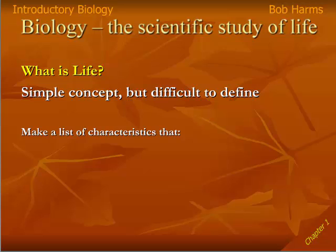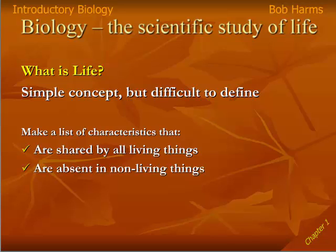Rather than try to define life, I'd like you to take a minute and make a list of characteristics shared by all living things. What are some characteristics that all living things must do to be alive? Those characteristics should be absent in non-living things. For example, the first thing that maybe jumps into your head is carbon. We know all living things are made of carbon, but carbon is also found in the air and in rocks, so carbon is not absent from non-life — it doesn't really separate life from non-life.